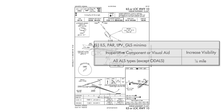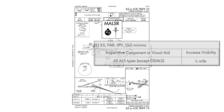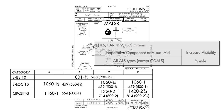This is the approach plate for the ILS we were on. The approach lighting system on this one is a medium intensity approach light system with runway alignment indicator lights — MALSR. In other words, it applies for this table. Here are the minimums for the approach. We should increase the visibility minimum for the ILS from one half mile to three quarters of a mile.